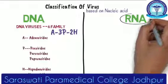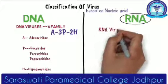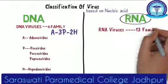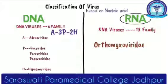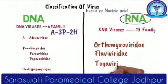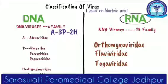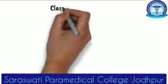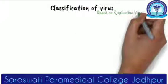The viruses that contain RNA are called RNA viruses. There are mainly 13 RNA families. Common examples include Orthomyxoviridae, Flaviviridae, and Togaviridae. At the BSc or diploma level, it is necessary to remember at least the 6 DNA families. There is also another classification based on the replication mechanism of viruses, divided into six categories given by Baltimore, commonly called the Baltimore classification.